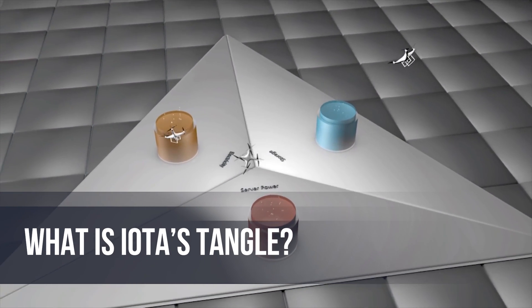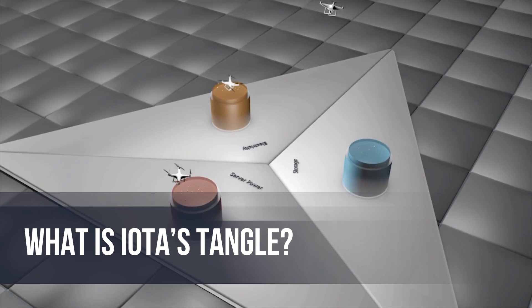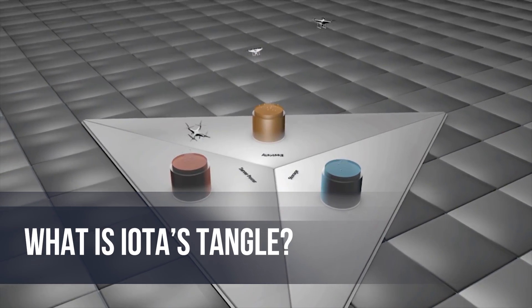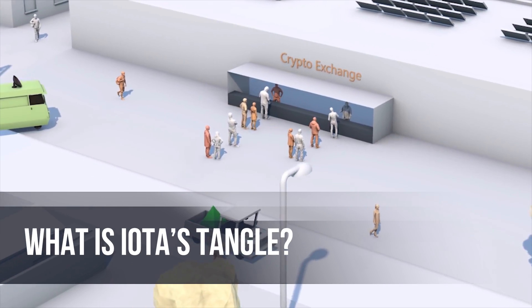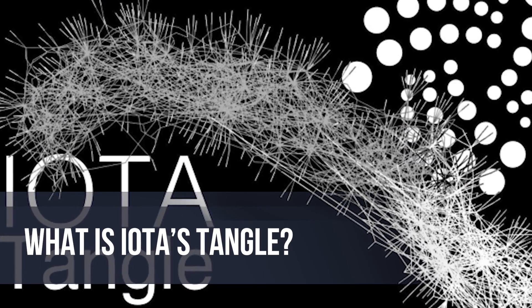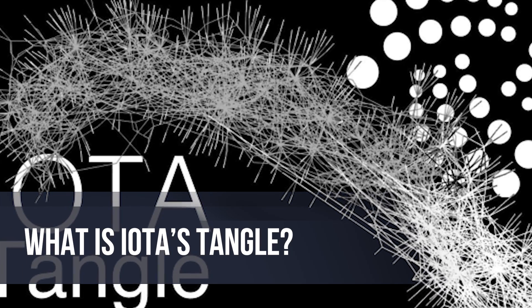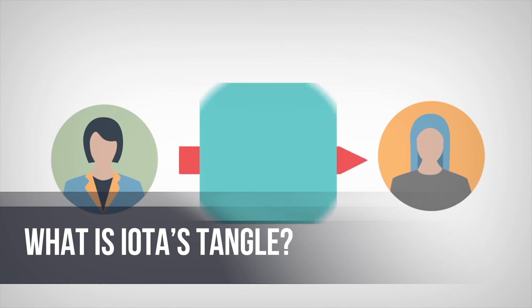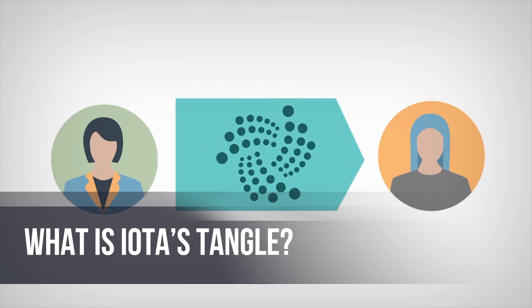The Tangle is IOTA's term for its directed acyclic graph (DAG), on which the network is based. Instead of being packaged into blocks chained one after another, IOTA's transactions are connected in a big tangled web. Rather than having mining firms mine whole blocks, each user verifies the past two transactions with a small amount of work before sending their own transaction. The cost of each transaction is effectively just the electricity it takes to verify those past transactions, rather than a fee set by miners. Since Tangle technology doesn't chain blocks, transactions are processed in parallel and happen nearly instantly — this is why Tangle-based cryptocurrencies are able to achieve the highest TPS rates among all blockchain-based currencies.